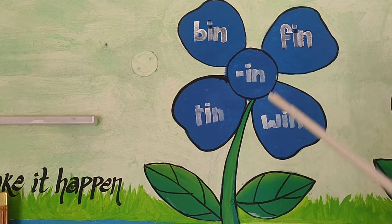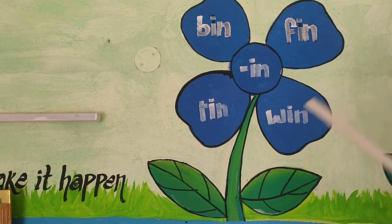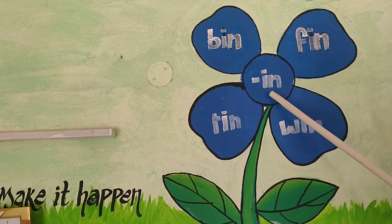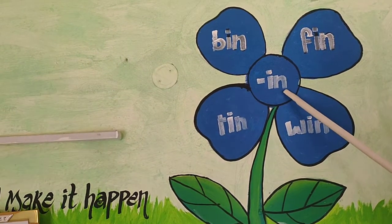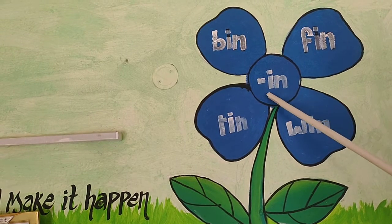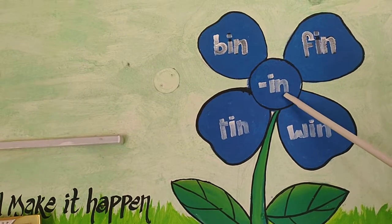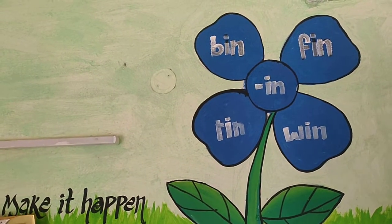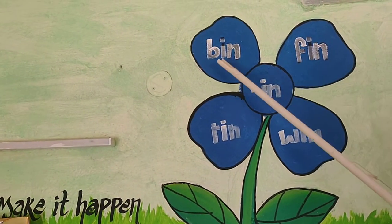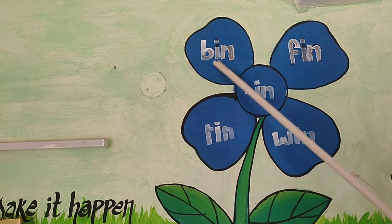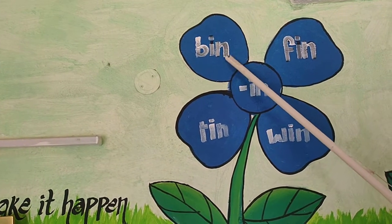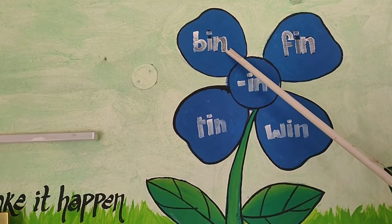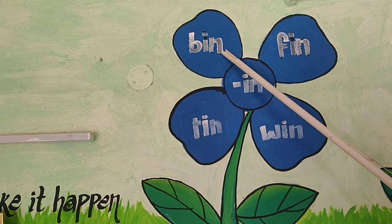The leaves are green in colour. Now we learn some words ending with I-N. I and the entire word is some words now to know. B-I-N, bin. B-I-N, bin.